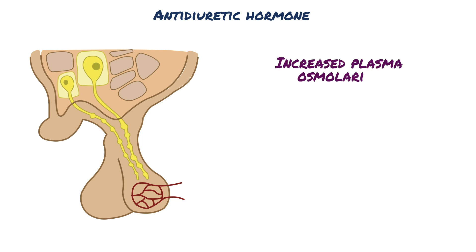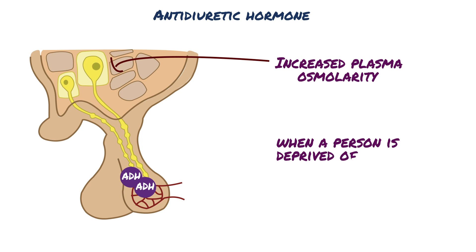Increased plasma osmolarity is the most important physiologic stimulus for increasing ADH secretion. For example, when a person is deprived of water, serum osmolarity increases. This increase is sensed by osmoreceptors in the anterior hypothalamus. Action potentials are then initiated in cell bodies of nearby ADH neurons and propagated down the axons, causing secretion of antidiuretic hormone from nerve terminals in the posterior pituitary.